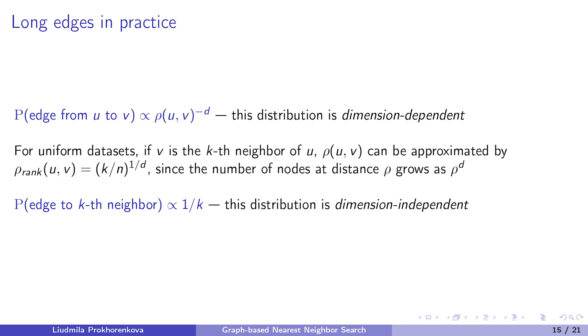Kleinberg's result influenced many graph-based nearest-neighbor search algorithms, including the HNSW algorithm. But to the best of our knowledge, the proposed probabilities were never used directly. One reason for that is the fact that these probabilities depend on dimension. However, real-world datasets may have small and unknown intrinsic dimension while being embedded into a larger dimensional space. We noticed that it is possible to replace the distance between the elements with a rank-based distance. In terms of ranks, the probability of an edge to the kth neighbor should be proportional to 1 over k, and this probability is dimension-independent. For uniform datasets, this reformulation is equivalent to the original one, but rank-based probabilities can be easily used for general datasets.